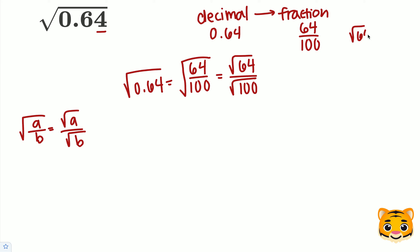The square root of 64 is equal to 8 as 64 is equal to 8 squared. The square root of 100 is equal to 10 as 100 is equal to 10 squared. So we can rewrite the square root of 64 over the square root of 100 as 8 over 10.